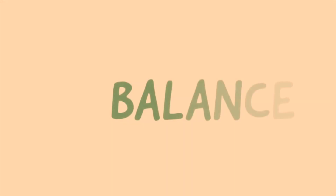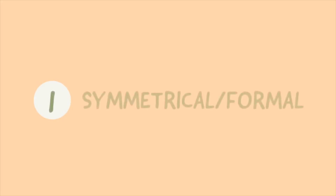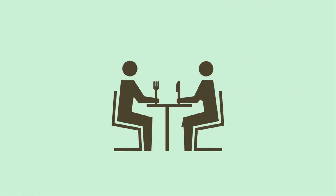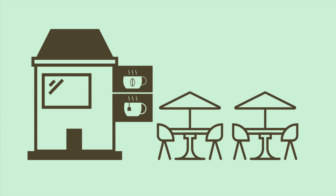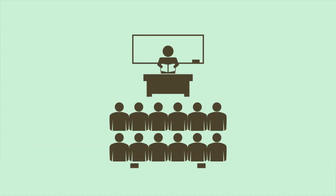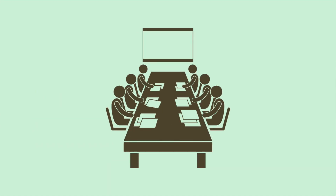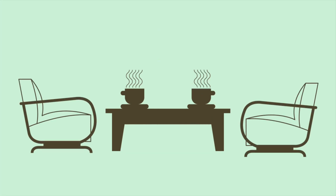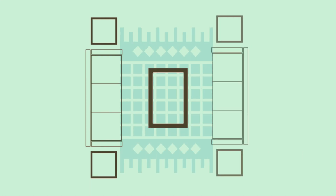There are three different kinds of balance. Number 1: Symmetrical or Formal. Traditional or formal spaces call for symmetrical balance, where the space is evenly split into two sides that mirror each other. For example, two chairs on either side of a coffee table can be said to be symmetrically balanced. This kind of balance is easy to achieve as design elements are repeated on each side.